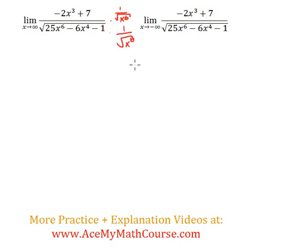So here we go. So let's multiply the top and the bottom. Now this, of course, multiplies both elements here. So we're going to have negative 2x cubed over the square root of x to the power of 6 plus 7 over the square root of x to the 6.